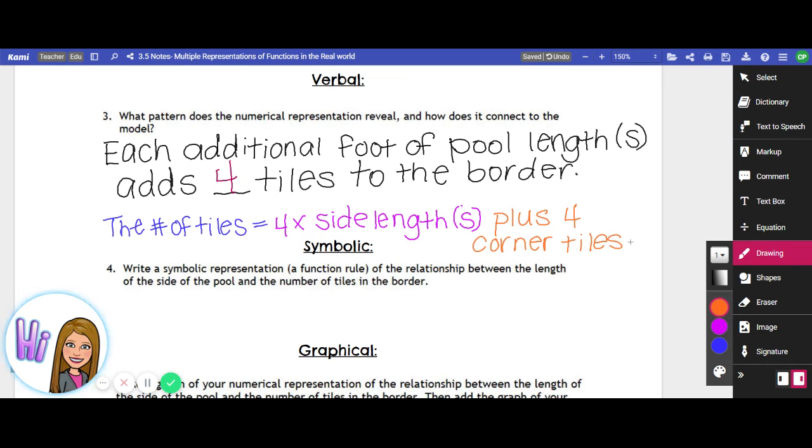And this is really going to help us when we move on to this symbolic part, which is to write an algebraic function rule or formula for this. So now when we look at this, I pretty much already set it up like it's a math equation, which it's saying the same thing: each additional foot of pool length.